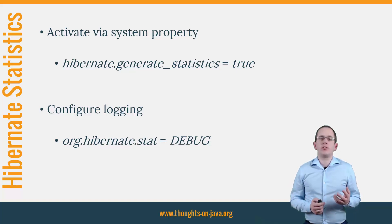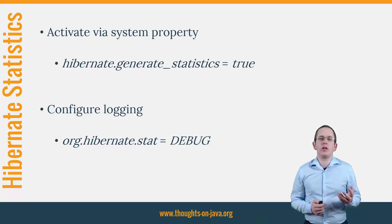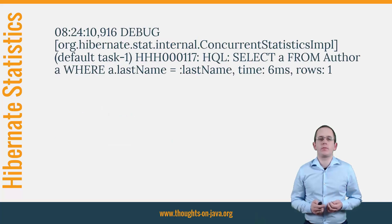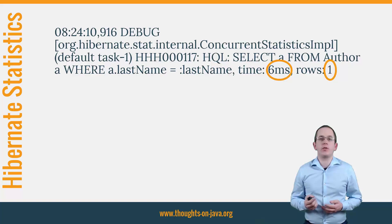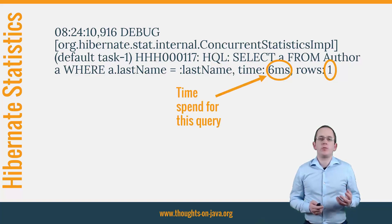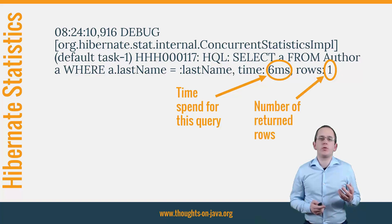When you activate the Hibernate statistics, you should also set the log level for org.hibernate.stat to debug to get even more information about each JPQL and Criteria query. When you do this, you get a log message for each JPQL and Criteria query. It shows the query and two interesting pieces of information at the end of the log message: the time spent to execute the query and the number of returned rows.